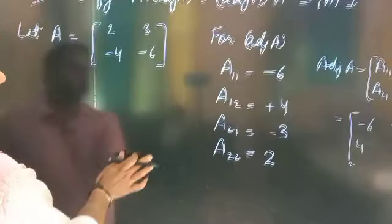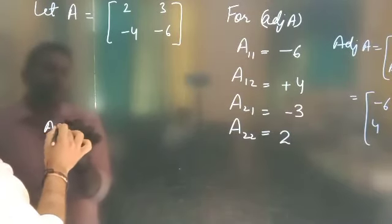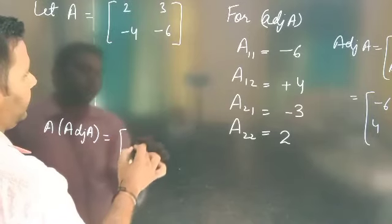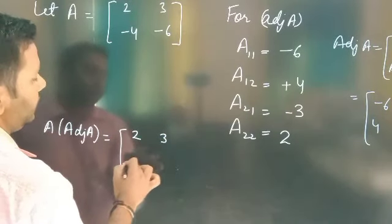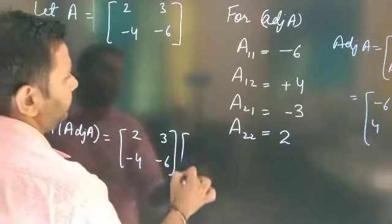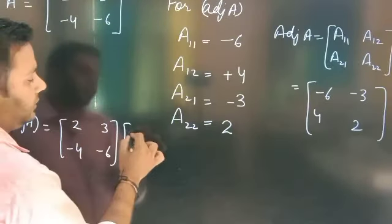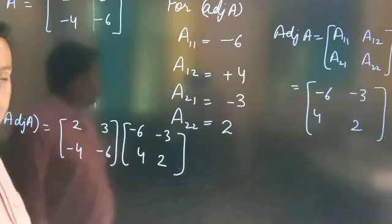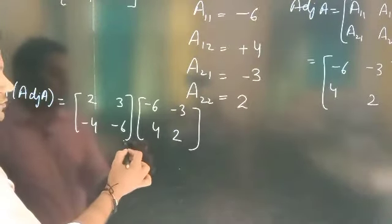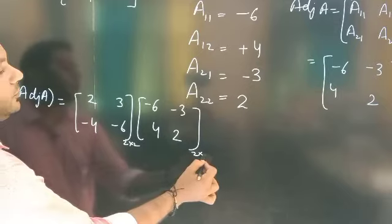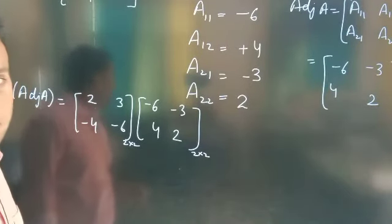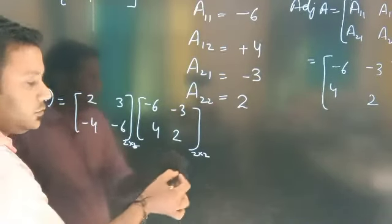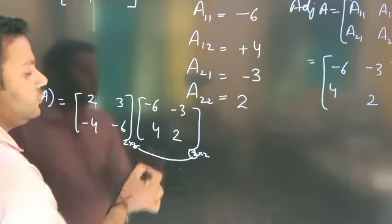Now verification start करते हैं। सबसे पहले A into adjoint A की value find out करते हैं। So A matrix है: [2, 3; -4, -6], multiplied with its adjoint, that is [-6, -3; 4, 2]. Multiplication is possible because order 2×2 and 2×2 — multiplication possible होता है when number of columns in first equals number of rows in second।